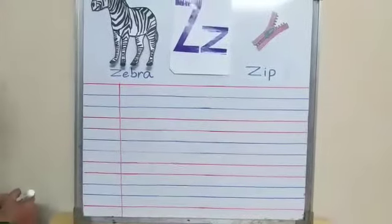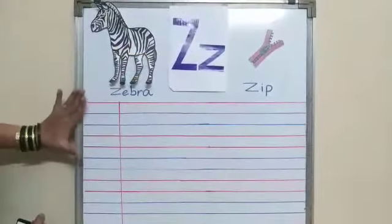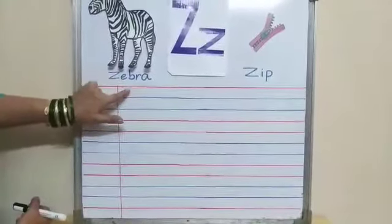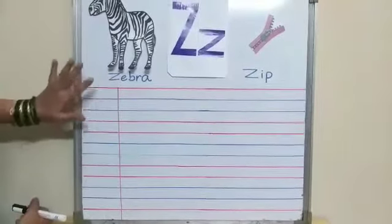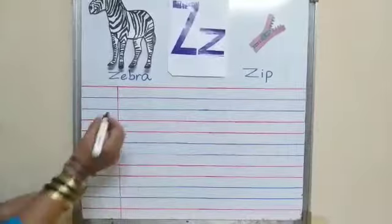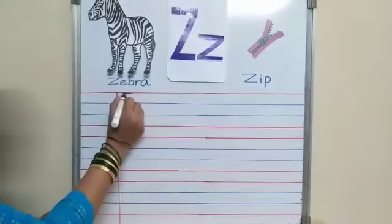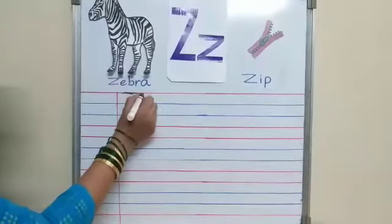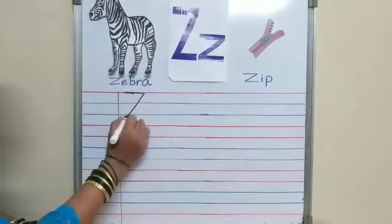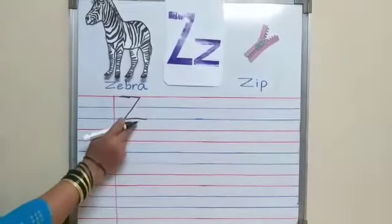Now let's see how to write Z. You all know the red and blue lines. We will start from the first red line to the second blue line. We will not write in the margin. First we will write a sleeping line on the red line, then a slanting line till the second blue line, and again a sleeping line on the blue line.